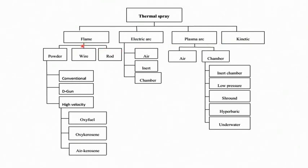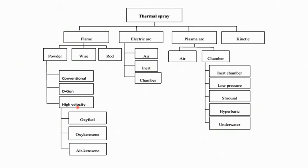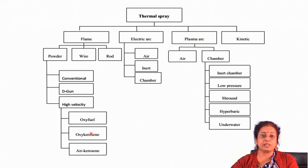The kinetic spraying technique is mostly applied for deposition of polymeric materials or nano-structured materials, where there is risk of degradation of the microstructure due to heat. Under flame spray, sub-classifications are based on the form of the precursor material — it may be powder, wire, or rod. If in powder form, it may be conventional flame spraying, detonation gun spraying, or high velocity oxy-fuel (HVOF) spraying.